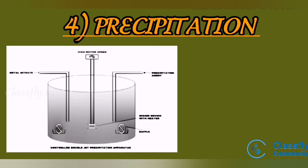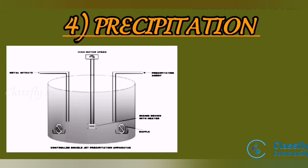The concentration of the solution increases and reaches a critical level called supersaturation. At this stage, nucleus formation is initiated. A nucleus further grows into particles which get precipitated. The product obtained is filtered, washed with water, air dried, and finally calcinated at high temperature to remove counter-anions.